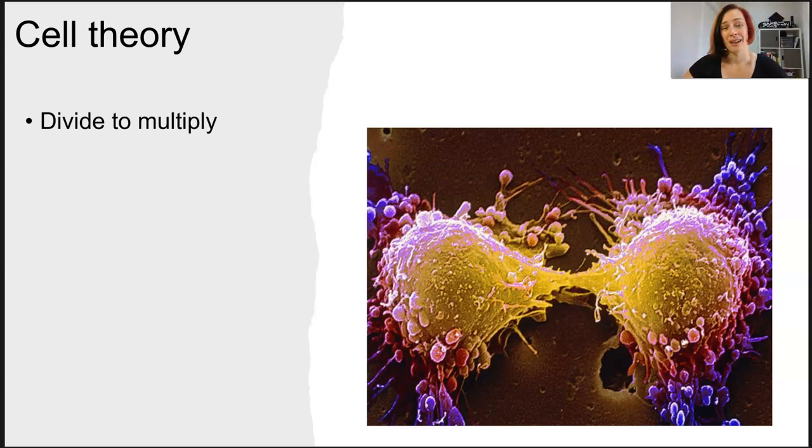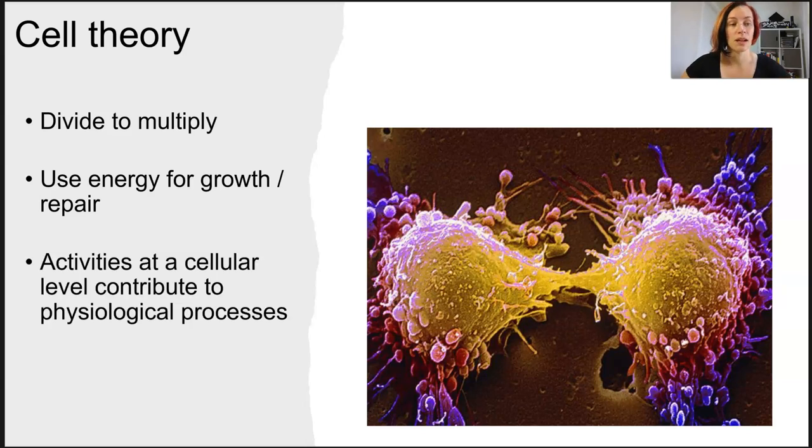Cells actually divide to multiply, which mathematically sounds quite confusing. They use energy for growth and repair, they can't do all of the tasks they need to do without energy, and the activities at a cellular level contribute to the physiological processes, the systemic processes that are going on.